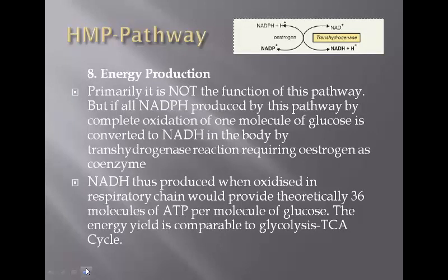Energy production is not directly associated with this pathway, but if all NADPH produced by complete oxidation of one molecule of glucose is converted to NADH via a transhydrogenase reaction — which requires a coenzyme — that NADH, when oxidized in the respiratory chain, is associated with ATP production. Theoretically, it provides almost 36 molecules of ATP, comparable to that produced by glycolysis and the TCA cycle.